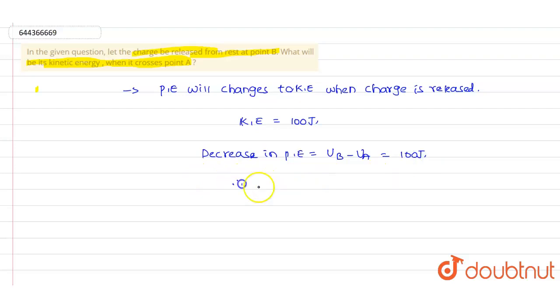And increase in kinetic energy value is also the same. Increase in kinetic energy will be equal to kinetic energy at point A. So we have found that kinetic energy is 100 joules. According to that, the correct answer for this question is 100 joules.